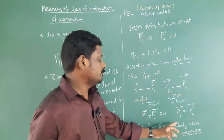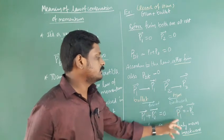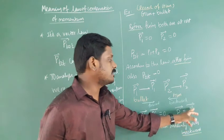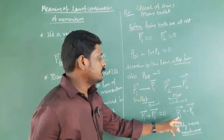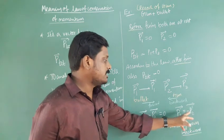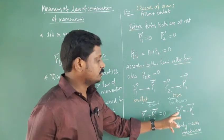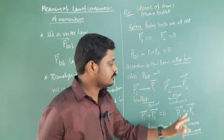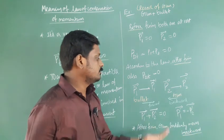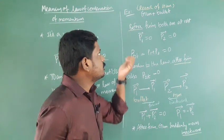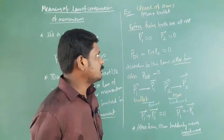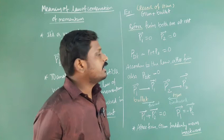P1 dash is the momentum of bullet after firing. Minus P2 dash is the momentum of gun. Because gun exerts a force and bullet also exerts a force in opposite direction, after firing gun suddenly moves backward. That is also called recoil of gun. They may ask in three marks to define recoil of gun.